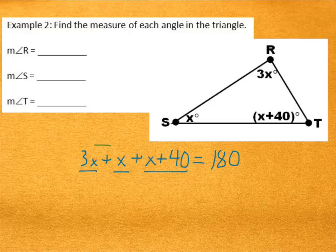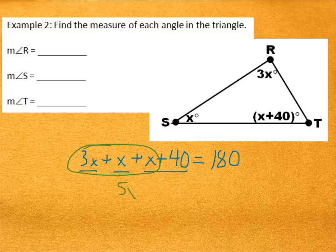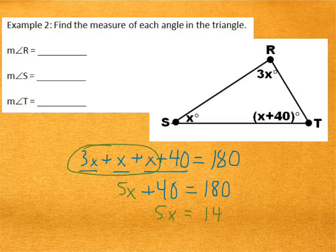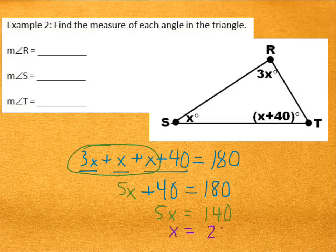So, solving that, I would combine like terms, making 5X. Subtracting 40 from both sides, I would get 5X equals 140. Then, dividing both sides by 5, I would get a value of X that is 28.